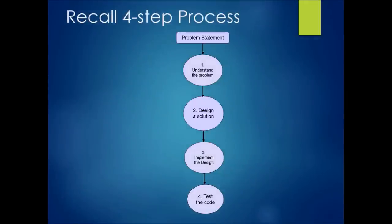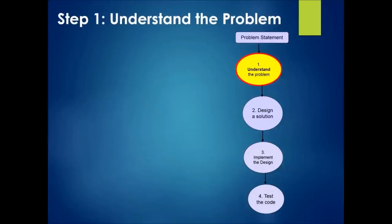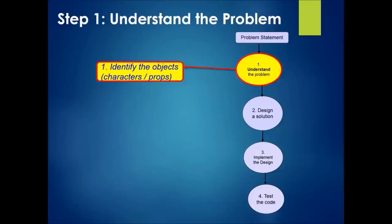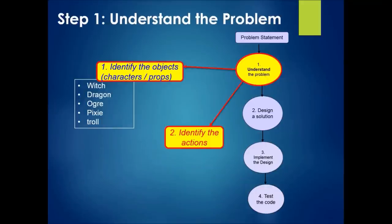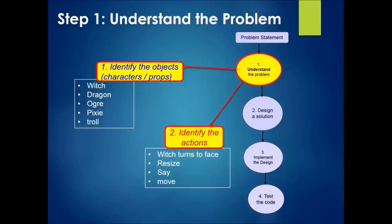We're going to follow the four-step process to create this animation. Step 1: Understand the Problem. Let's identify the objects — the characters or props needed. From the animation we need a witch, a dragon, an ogre, a pixie, a troll, and props like a magic wand. Identify the actions: the witch is turning to face an object, resize, say, move.